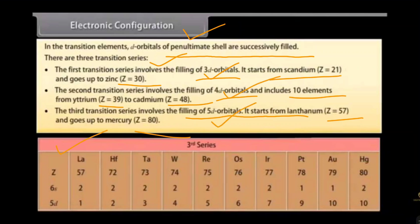The third series of the d block is the 5d series, where the electron goes into the 5d orbital. The outermost configuration will be 5d¹ 6s² for hafnium (Hf), 5d² 6s² for tantalum (Ta), 5d³ 6s², and similarly you can write configurations for the 3d series and 4d series as well.